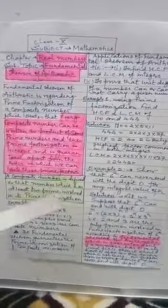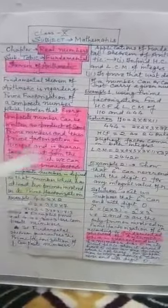A composite number is defined as that number which has at least two primes involved in its prime factorization. Because it is necessary to define first a composite number.